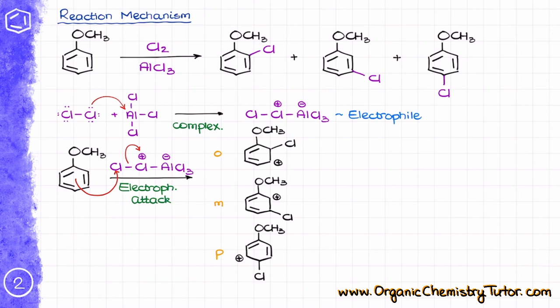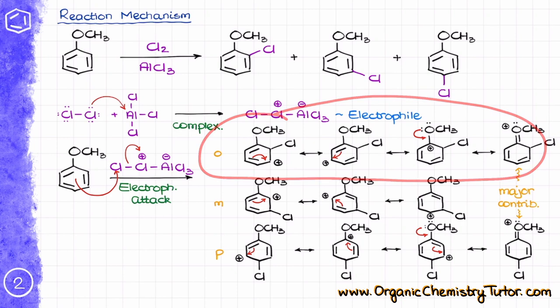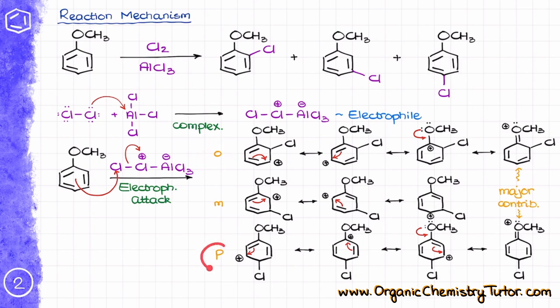Since we have three different resonance-stabilized intermediates, we need to draw all resonance structures for those to see if there is any difference between them. Once I have all my resonance structures together, I can see that in the case of the ortho and para-intermediates, we have four resonance contributors, while in the case of the meta-intermediate, we only have three. On top of that, the ortho and para carbocations have major contributors. This means those two sigma complexes will be more stable and will form faster. Remember, more stable intermediates are typically favored in reactions, and since they have a comparatively lower activation energy, they will form faster.